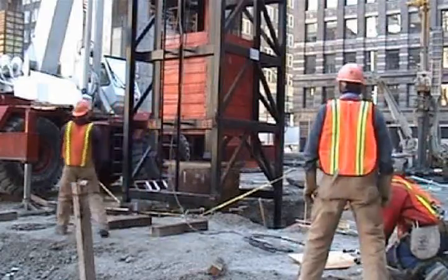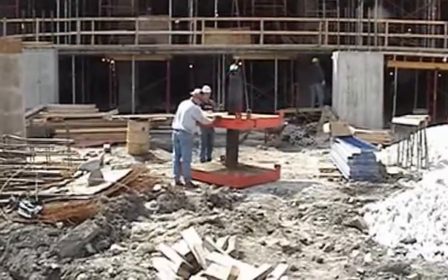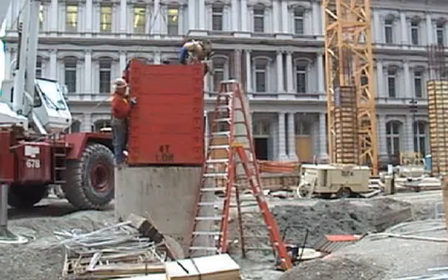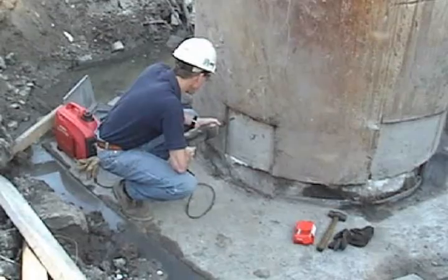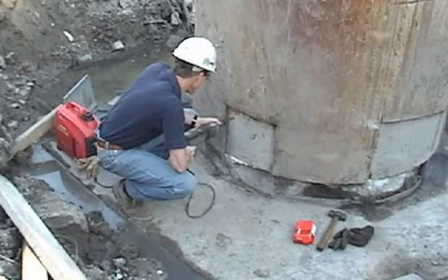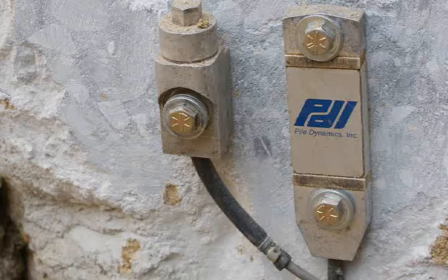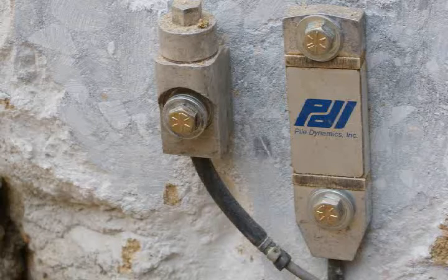A large drop weight is necessary for the test, and in this case it is modular. A crew stacks the modular blocks until a sufficiently large weight is achieved. An engineer attaches accelerometers and strain transducers to the upper portion of the shaft. These instruments measure how the shaft responds to the impact of the drop weight. The measurements are then used to calculate the soil resistance.